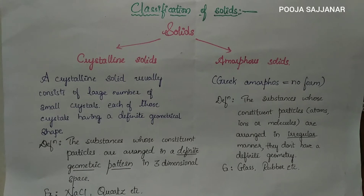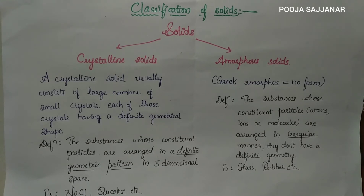Each of those crystals has a definite geometrical shape. The structure of crystalline solids contains the same type or same shape of crystals throughout the structure. For example, cubic shape, hexagonal, or tetrahedral, etc.